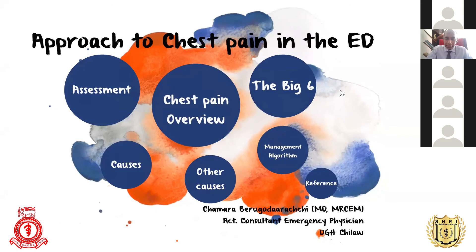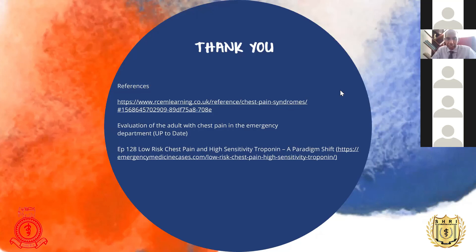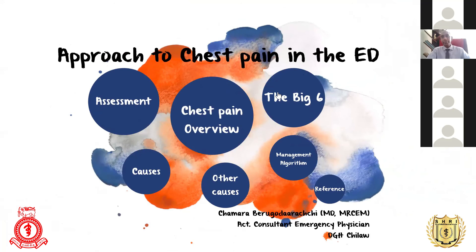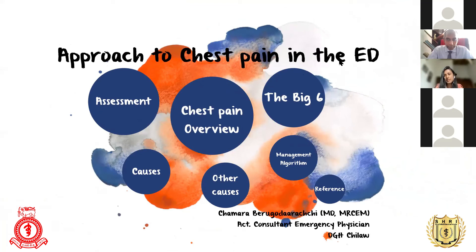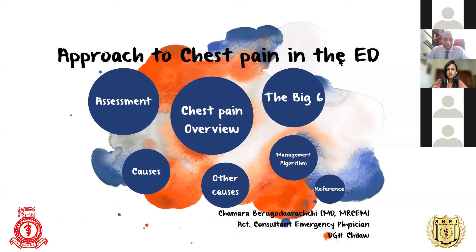Thank you very much, sir, for that very informative presentation. We have a question: how to differentiate new onset ST elevation or depression from an old one in the emergency department? That is a great question. Unless we have an old ECG, we cannot. So always from the history — if you had a similar pain before, did you get any ECGs? If you can find a previous ECG from a clinic book or records, check whether these changes are new. If you don't know whether it's old, you have to assume it's new. Point-of-care ultrasound may show wall motion abnormalities but also cannot differentiate new from old. The same applies to left bundle branch block. Q-waves themselves do not exclude the patient from emergency urgent PCI or revascularization strategies.